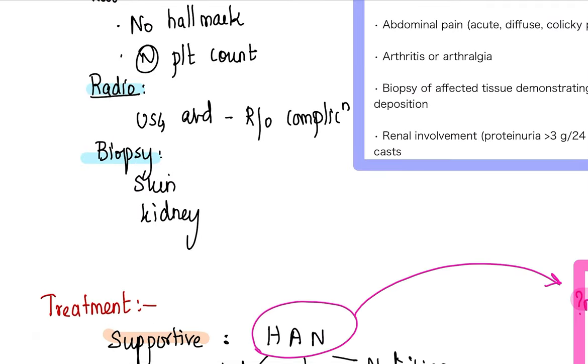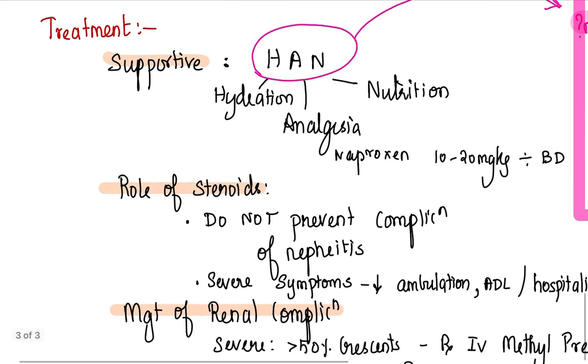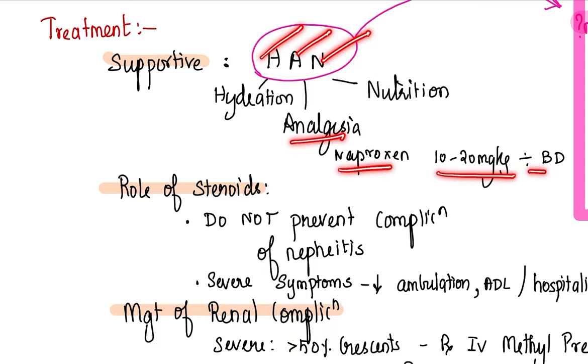Radiological investigation you do when you're suspecting an abdominal complication. Biopsy you do if you have unusual finding or severe findings of vasculitis and you're not very sure whether it is HSP or something else. You can do a skin biopsy, and renal biopsy indications we already discussed. How are you going to treat this patient? Treatment is mainly supportive treatment is by hydration, analgesia, and nutrition. Analgesia: naproxen can be given in 10 to 20 mg per kg divided doses.